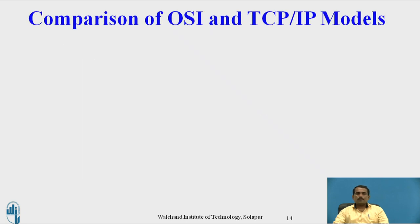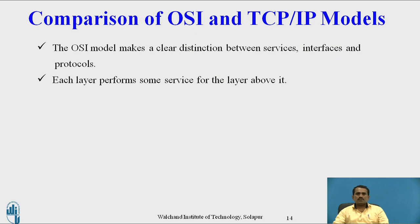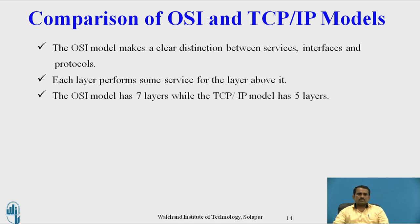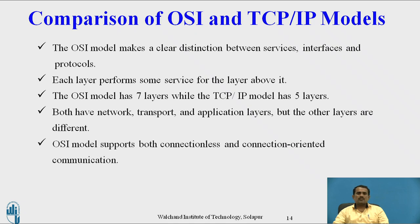A comparison of OSI and TCP/IP Reference Models: The OSI model makes a clear distinction between services, interface, and protocols, and each layer performs services for the layer above it. The OSI model has seven layers while the TCP/IP model has four or five layers. Both have network, transport, and application layers, but the other layers differ. The OSI model supports both connectionless and connection-oriented communication.